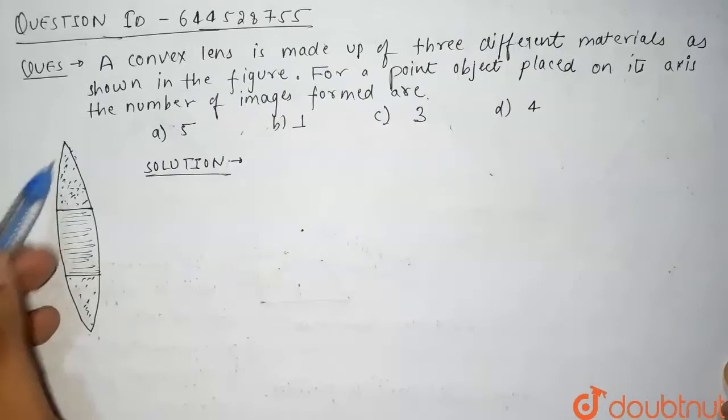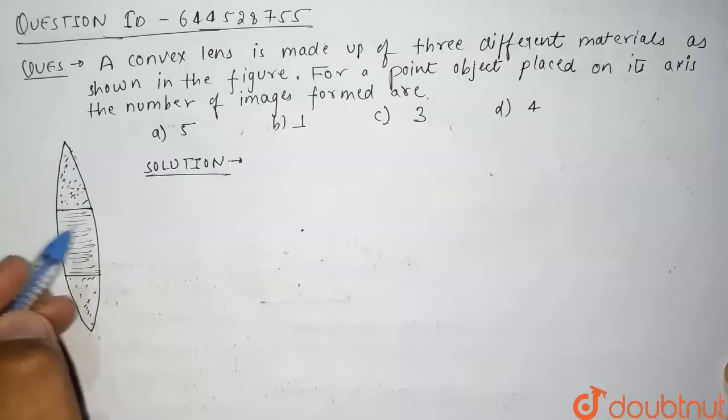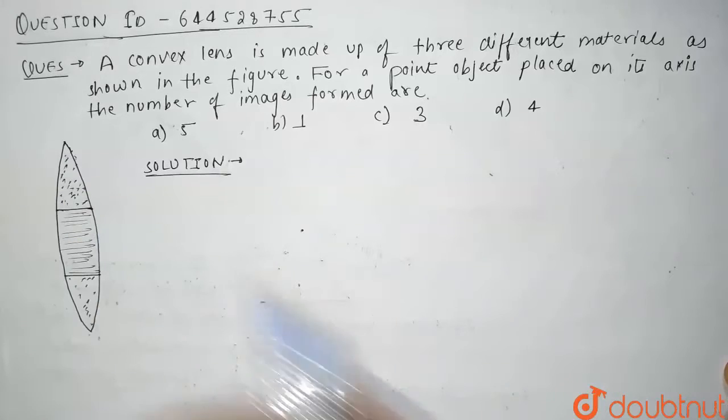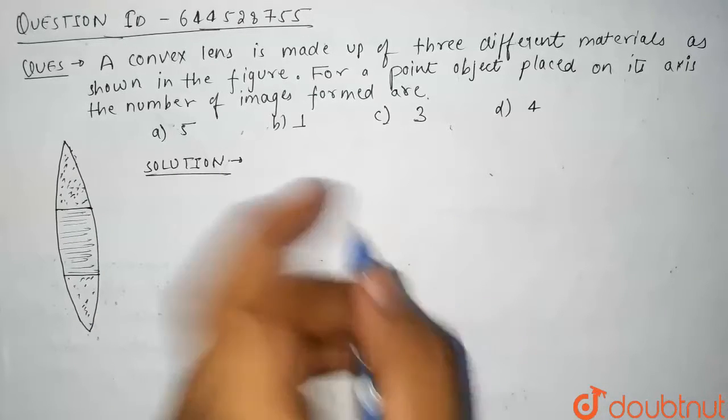So guys in this question we have been given a convex lens which is made up of three different materials as shown in figure. And we have to tell what is the number of images found for a point object.